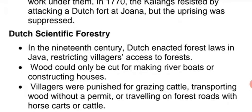Dutch scientific forestry — as explained in the last video — is a system in which the forest department controls the cutting of trees. Old trees are cut and new timber-producing trees are planted. In the 19th century, the Dutch enacted forest laws in Java restricting villages' access to the forest, imposing scientific forestry just as in India.